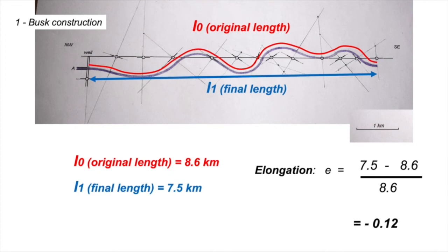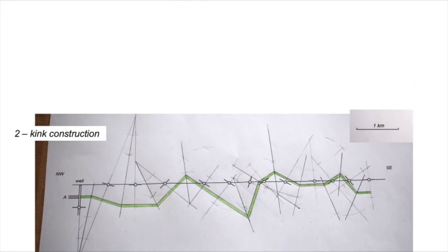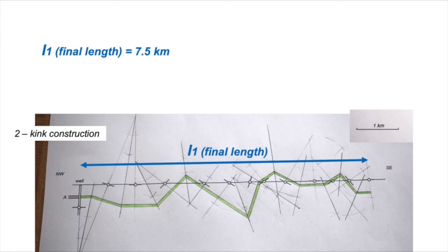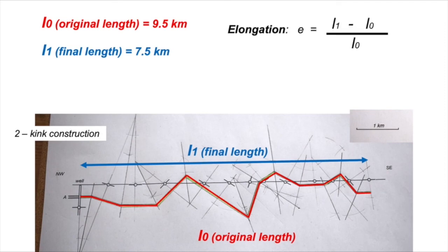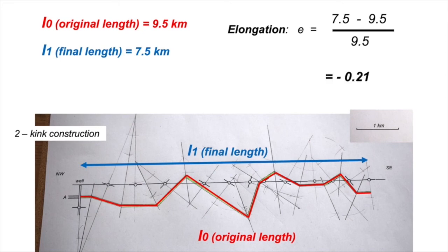Now for the kink band cross-section: the final length L1 is the same 7.5 km, measured from the well to the line perpendicular to the final bedding reading on the southeast side. Measuring all the way around those kinky folds along the green bed gives an original length L0 of 9.5 km. Plugging in: (7.5 − 9.5) / 9.5 = −0.21. So the elongation e for the kink construction is −0.21.